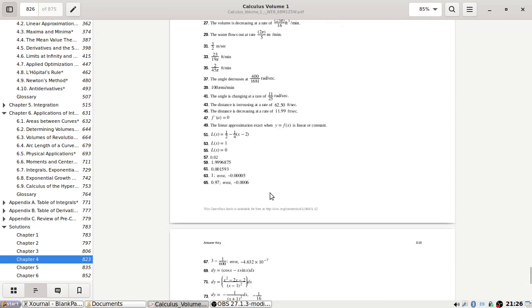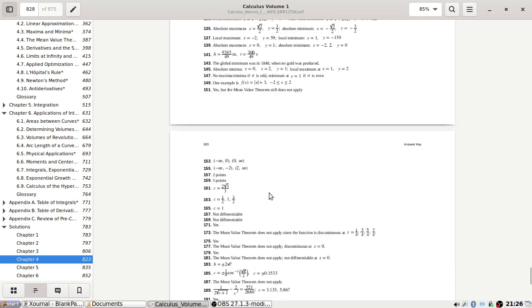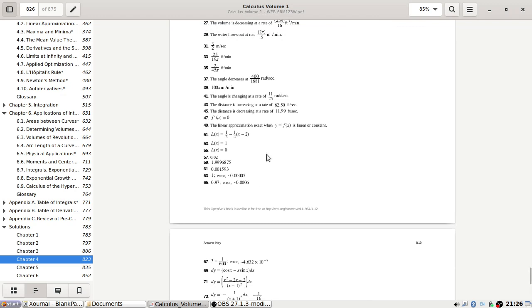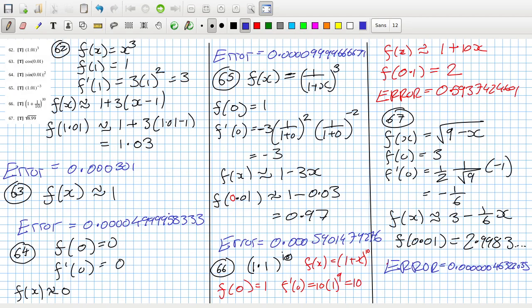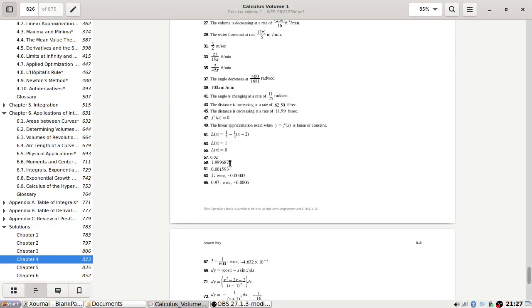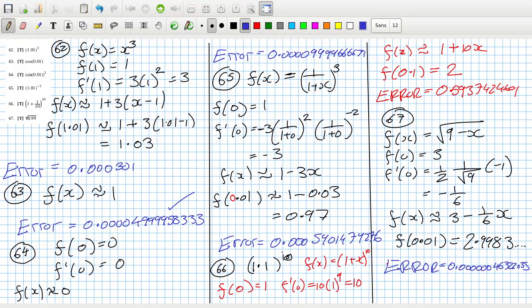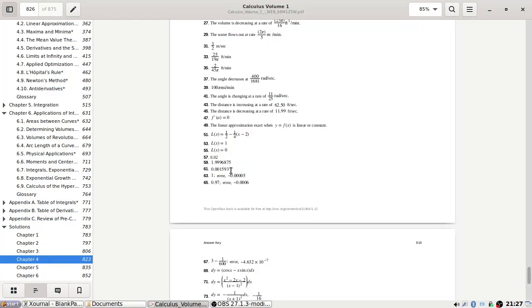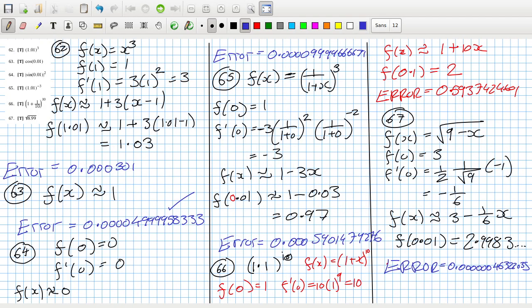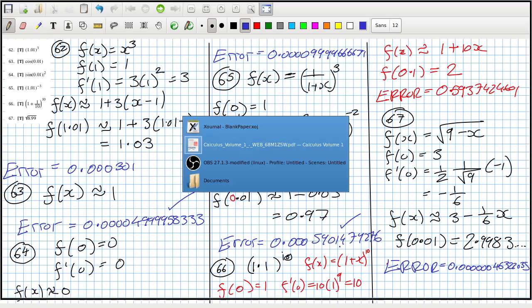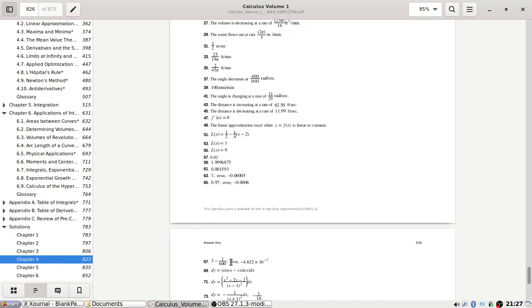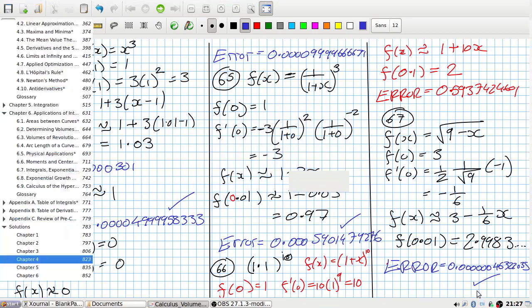Let's check the answers here. 63, we'd like to start with. Yep. 65 and 65. 0.97, error 0.0006, yep. And then 67. Zero, yeah, seven zeros, yeah.